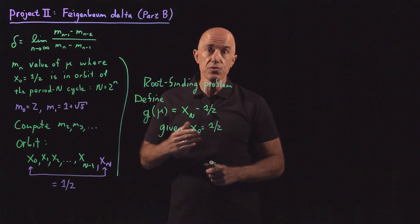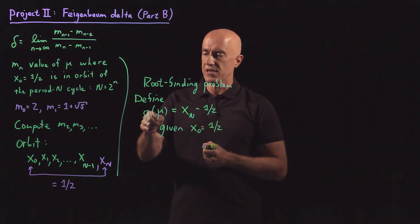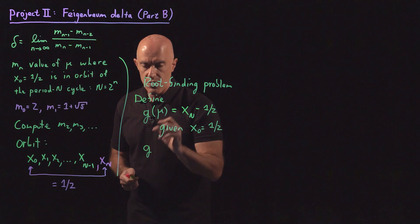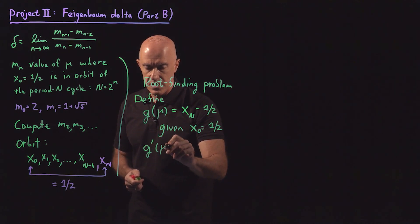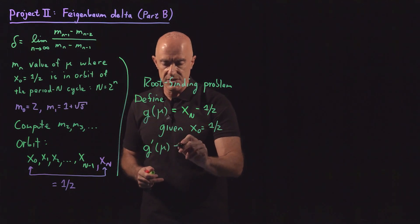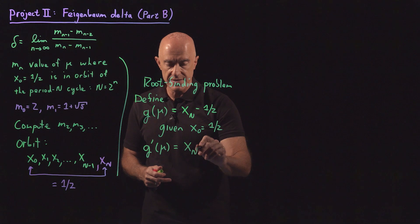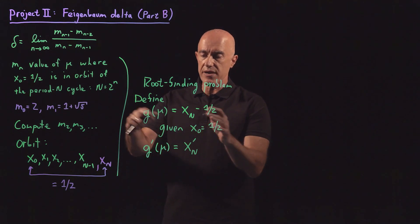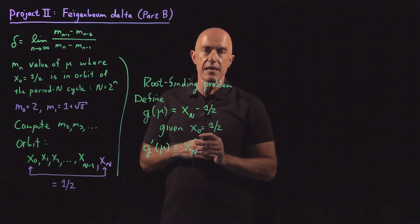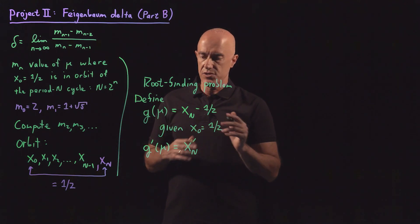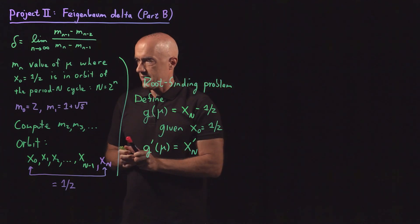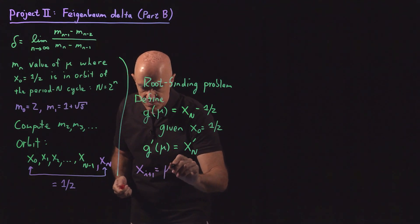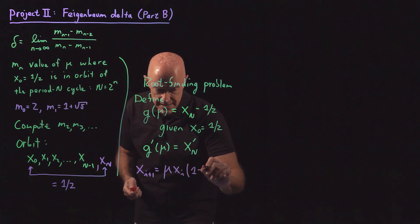We want to use Newton's method. Remember, you can only use Newton's method if you can find the derivative of this function. We can. We want to take the derivative g prime of mu — the derivative of this function with respect to mu is going to be the derivative of x sub N with respect to mu. The logistic map is x sub i+1 equals mu times x sub i times (1 minus x sub i).